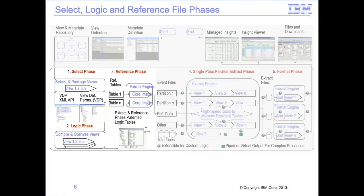The VDP is used in the logic table phase to produce two logic tables: one for the reference file phase and one for the extract phase. The logic tables contain function codes described in this and prior modules. Before the extract phase processes event files, the reference file logic table is used to extract core image files from the reference files. The reference file logic table does not contain any selection logic, so it does not remove any rows of data. Rather, the core image file contains only those fields needed for joins, plus the keys and any effective dates.